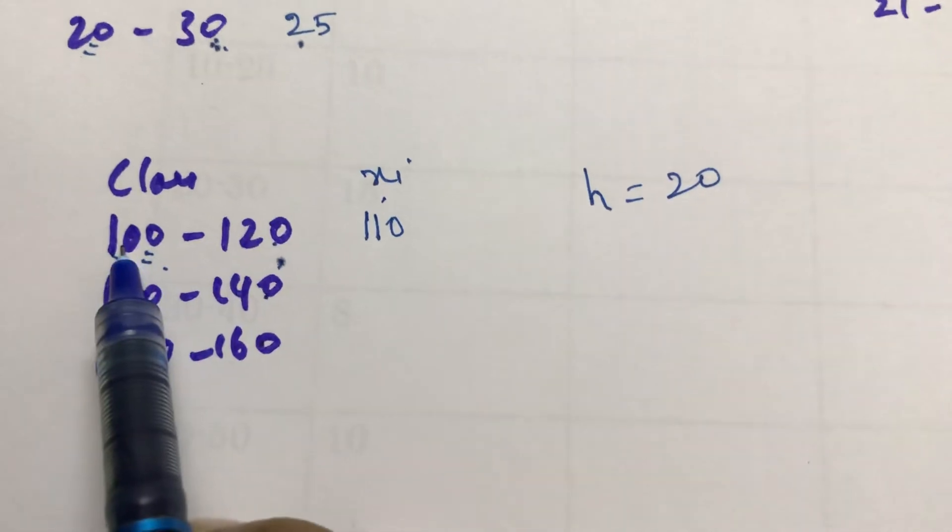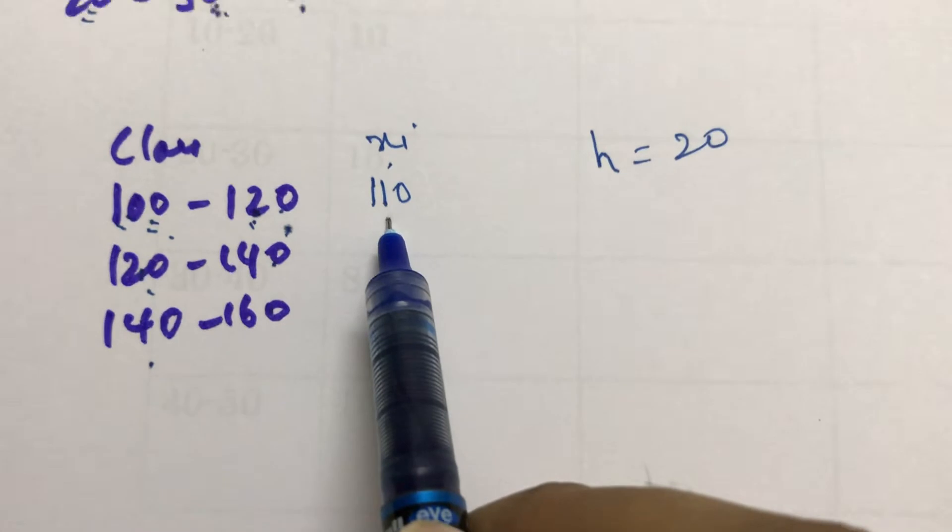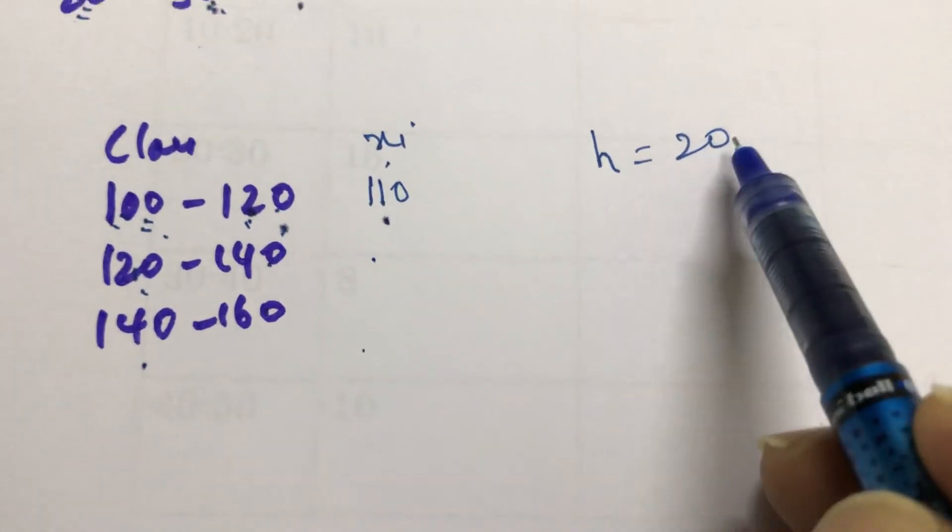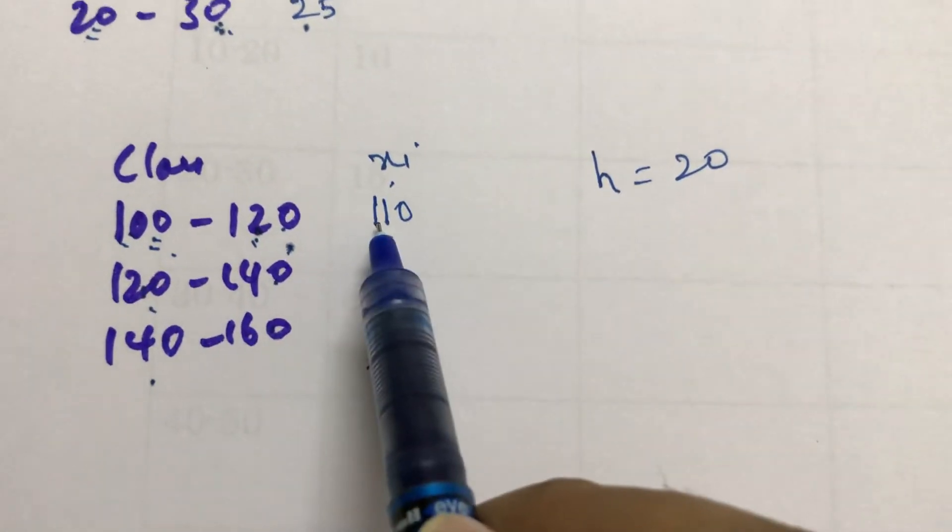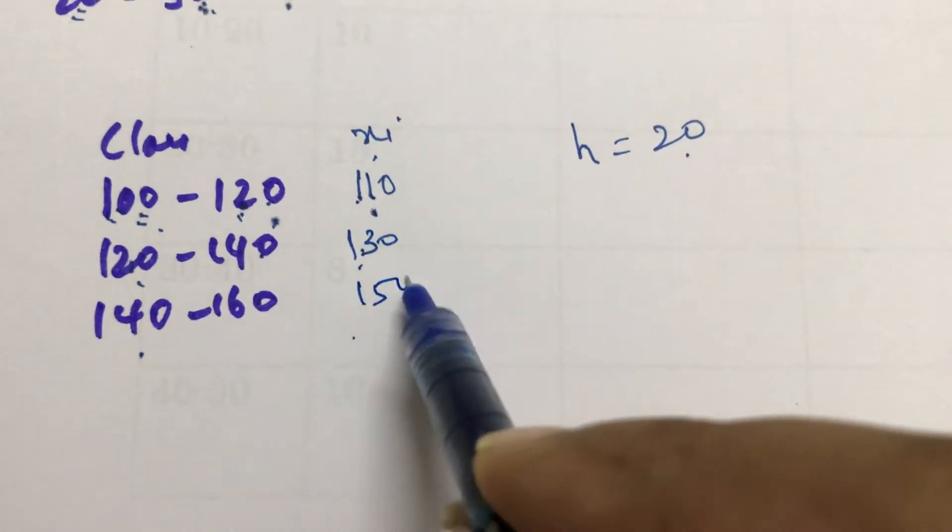Just find one class mark: 100 plus 120 is 220, 220 by 2 is 110. For remaining class marks, just keep on adding h. 110 plus 20, directly you can write 130. 130 plus 20, you can write directly 150.